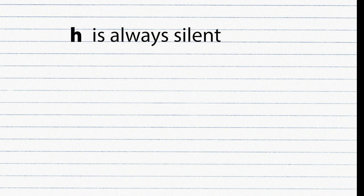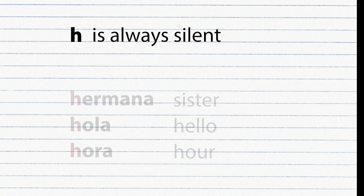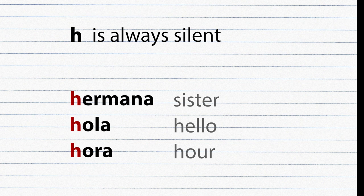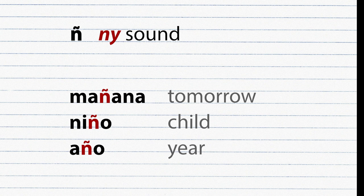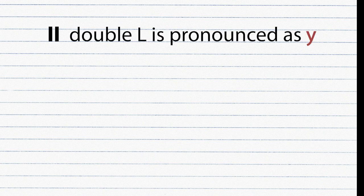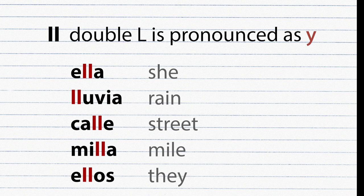H is always silent in Spanish. The letter Ñ has an NY sound. The double L letter is pronounced as Y. Examples: Ella, Lluvia, Calle, Milla, Ellos.